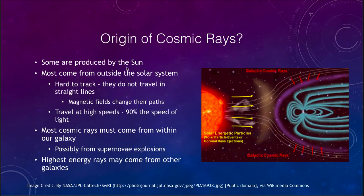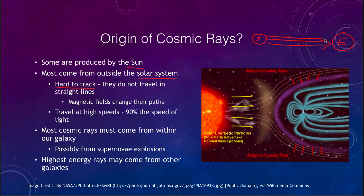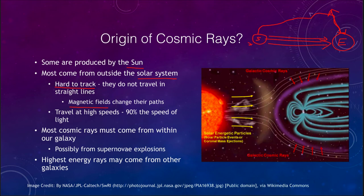Some cosmic rays are produced by the sun, but the vast majority come from outside our solar system. The difficulty compared to light rays is that they are very hard to track — they do not travel in straight lines. They follow long winding paths along magnetic fields, so if we detect a particle arriving from one direction, the real source may actually be in a completely different direction. Magnetic fields can change the paths of particles in ways they cannot affect electromagnetic radiation.